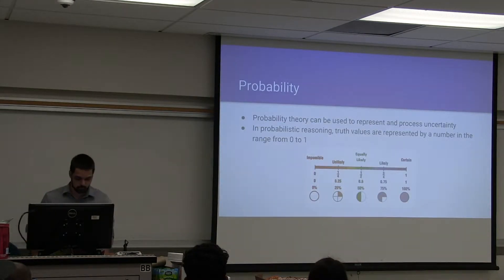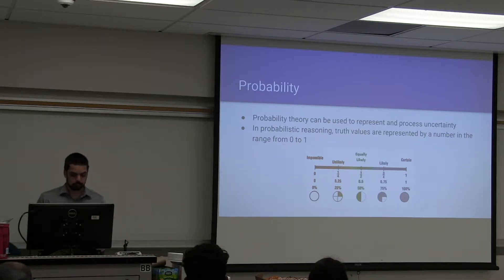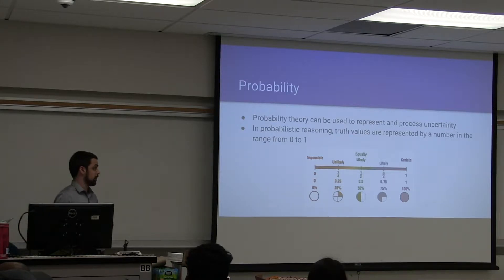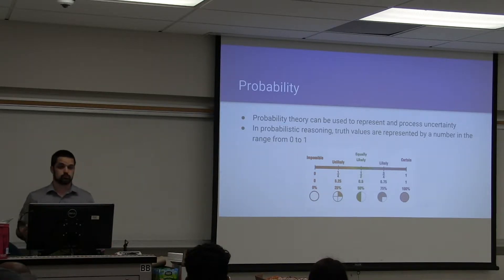Now we'll start talking about probability. Probability theory can be used to represent and process uncertainty. Probability is really just a tool that we can use to combine information and provides us a natural way to describe our assumptions in numbers. If we look at the scale, zero means that some event is impossible and won't happen, and a probability of one means that some event is certain and will happen, with anywhere in between portraying varying degrees of possibility.